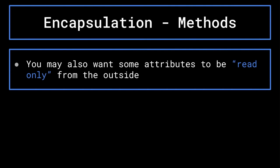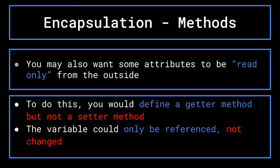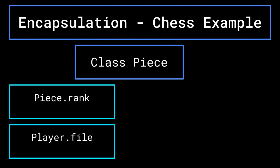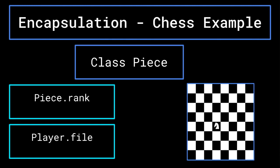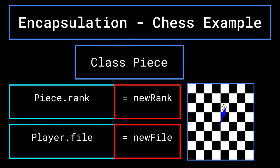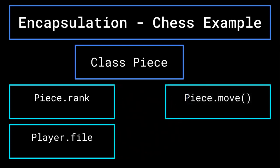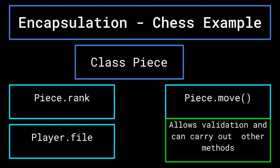For instance, if current health is not able to exceed maximum health, then I would have the set current health method check if current health would be greater than maximum health before making the change. Additionally, you may want some values to be read only from outside a class, which means you would only define a getter method and not a setter method. For another example, let's look back at chess. When dealing with a piece's position, you would want to keep track of its rank, or its row, and its file, or its column. It would be better to define a piece dot move function that takes the intended new position and checks if that is indeed a valid move.